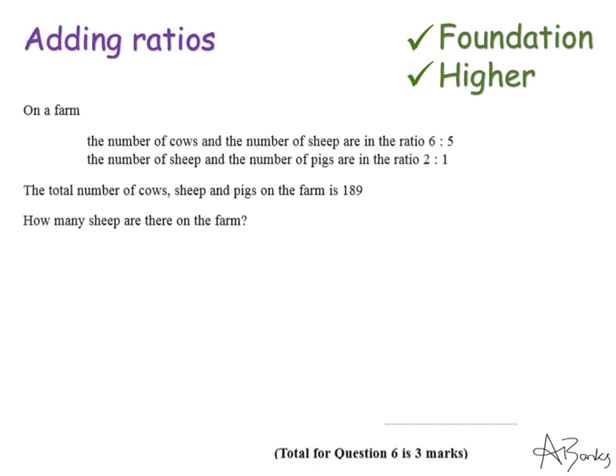So this question says, on a farm the number of cows and the number of sheep are in the ratio 6 to 5. The number of sheep and the number of pigs are in the ratio 2 to 1. The total number of cows, sheep and pigs on the farm is 189. How many sheep are there on the farm?